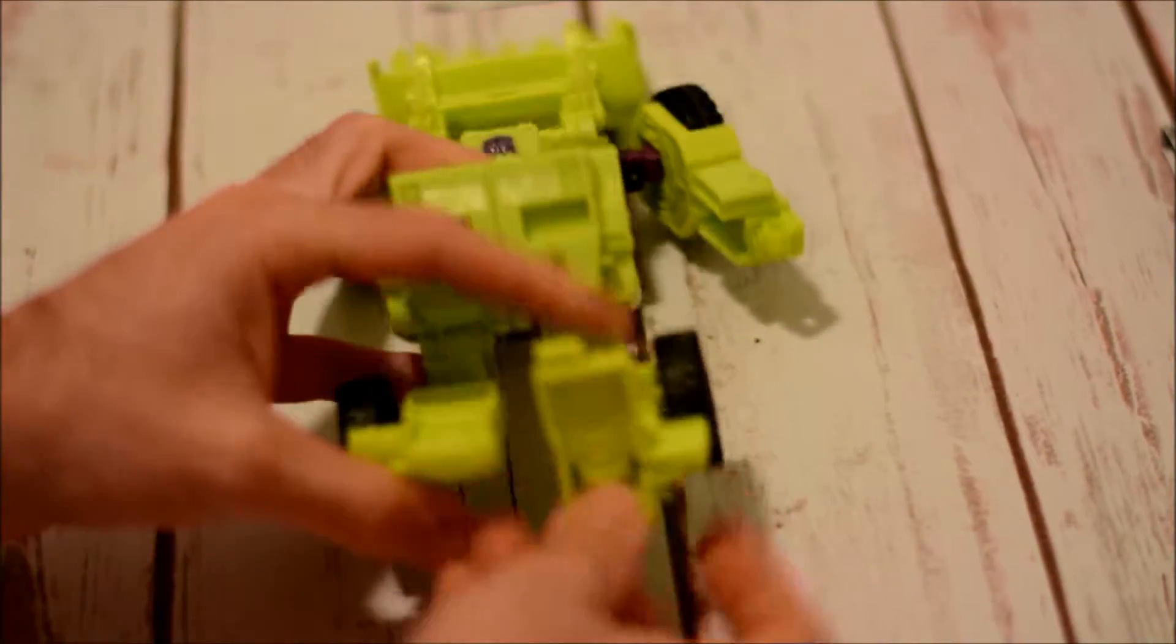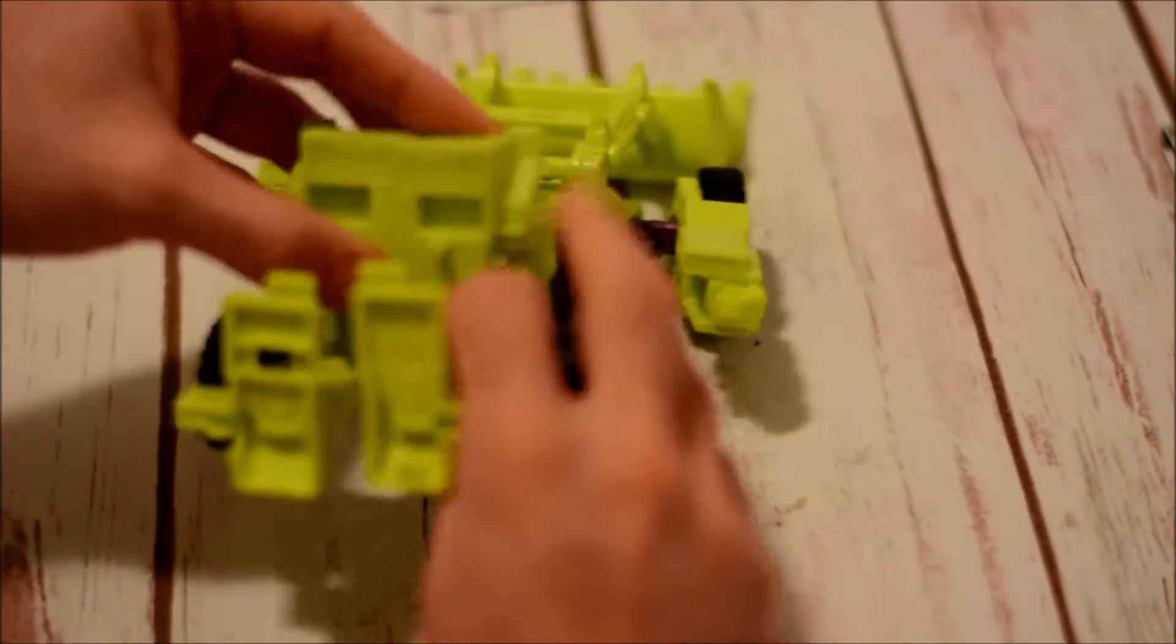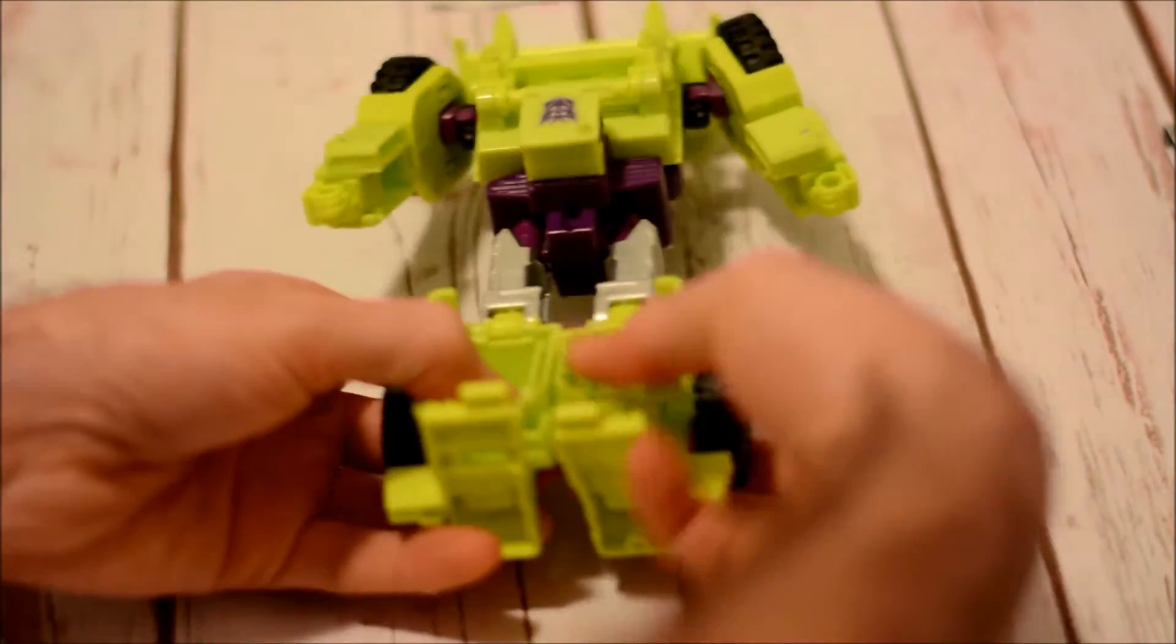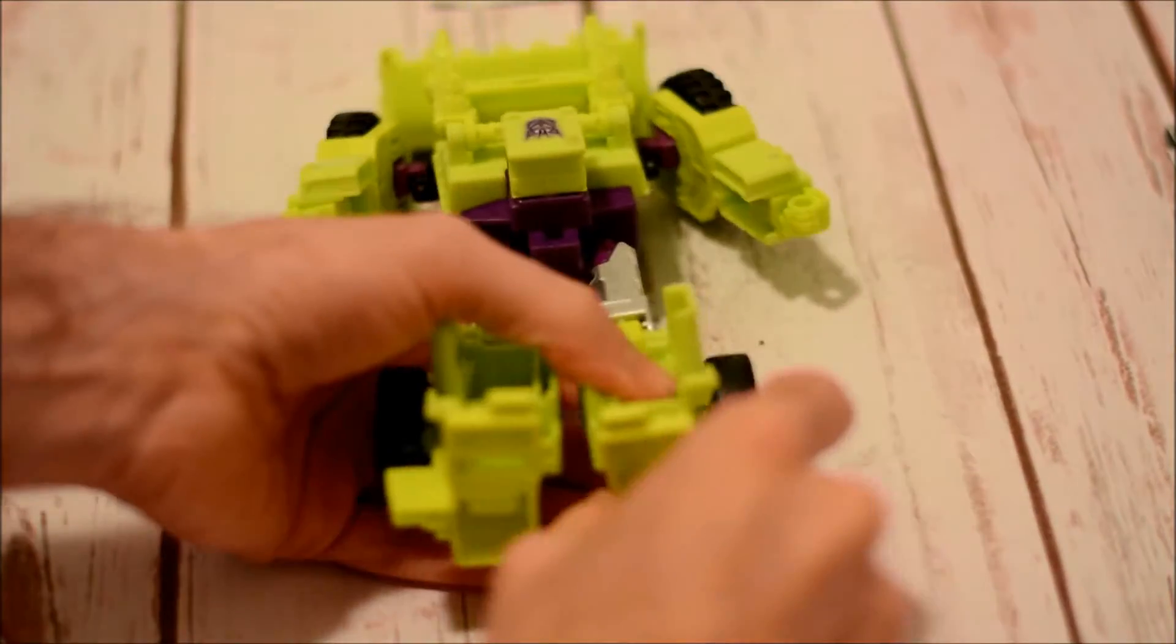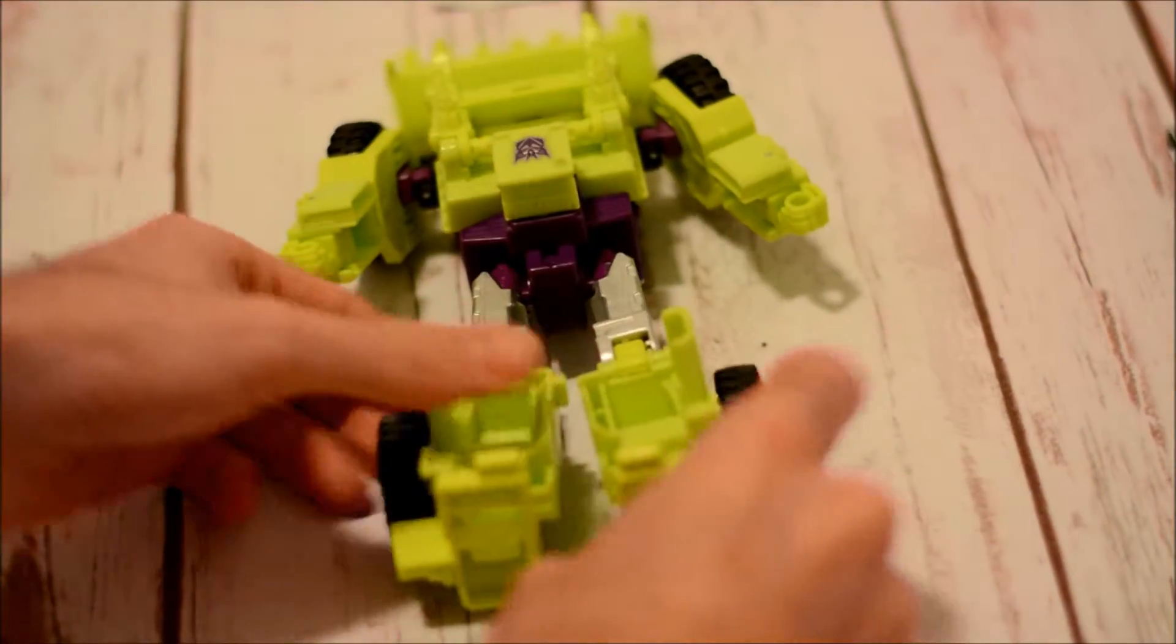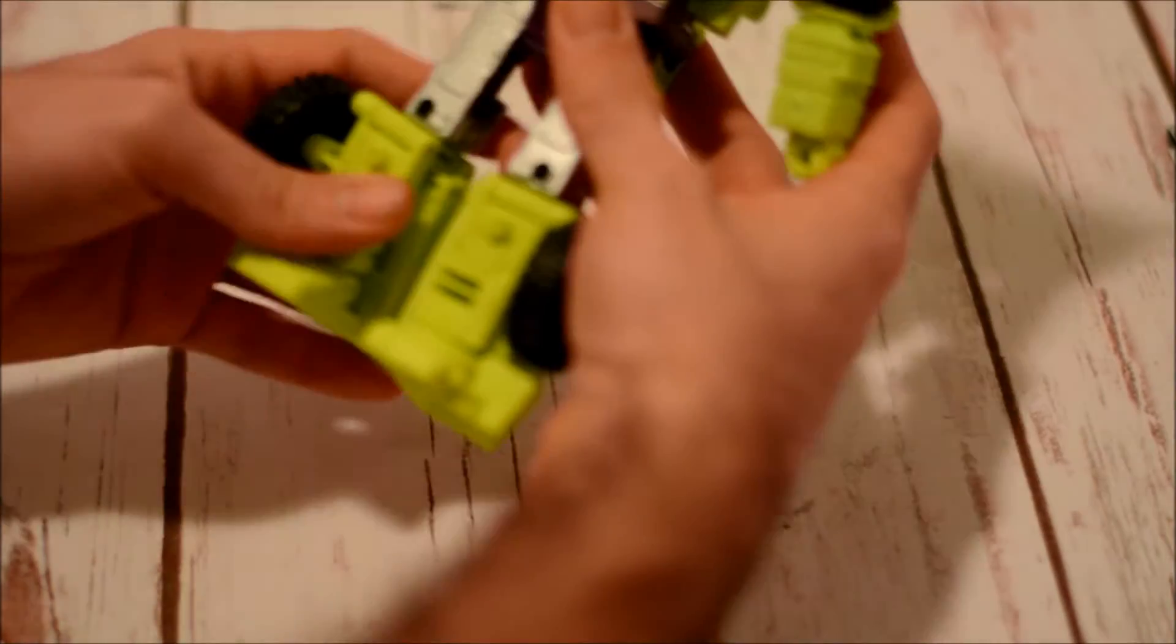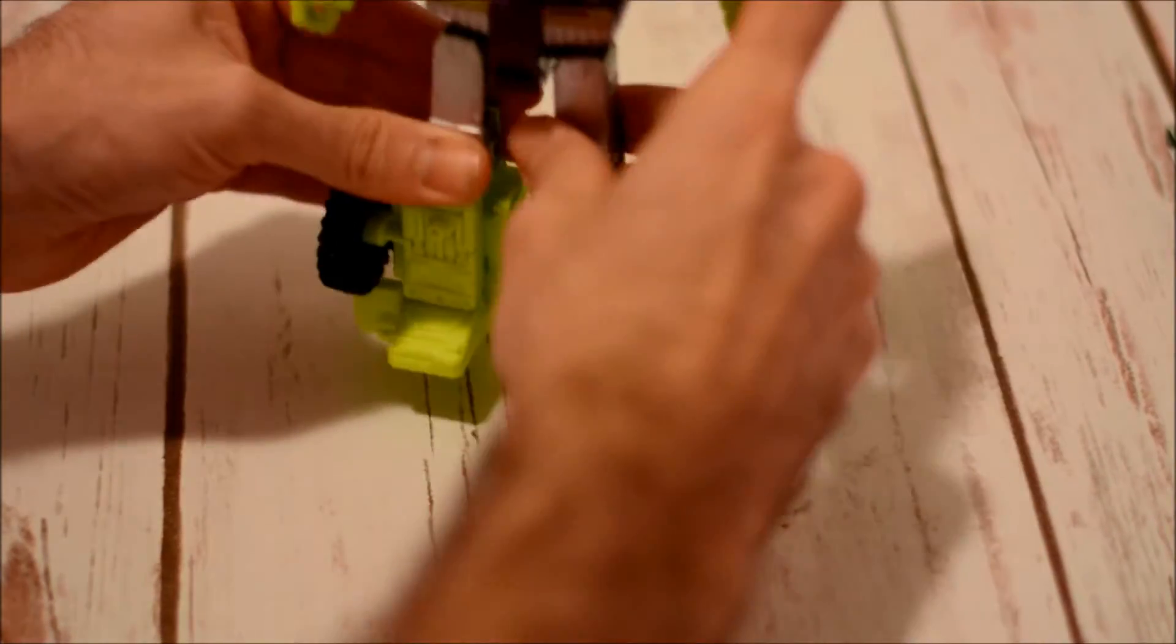Then all this connects to become the legs of the robot. You can unpeg them there. Pretty simple transformation, even simpler than the last two Constructicons we looked at.